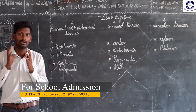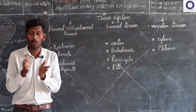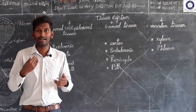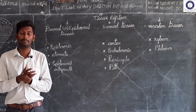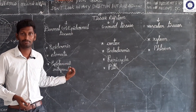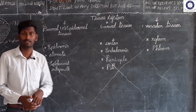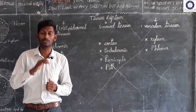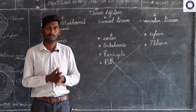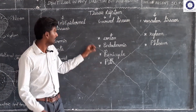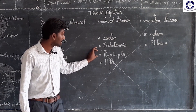Stomata — it is an opening or space in the outermost layer. The ground tissue system includes cortex, endodermis, and pericycle.